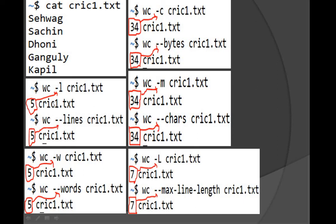When we use wc -l filename and press Enter, we can see the number of lines available in this file followed by the file name. We can also use wc --lines crick1.txt and when we hit Enter, we can see the number of lines available — this file has five lines.